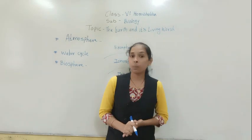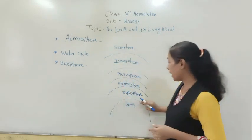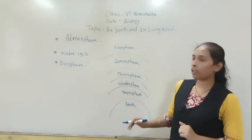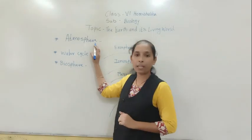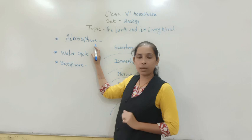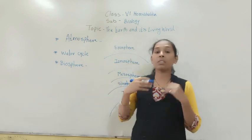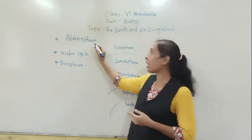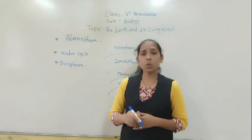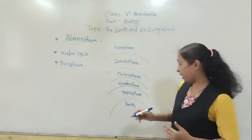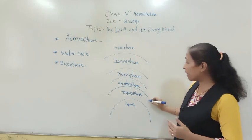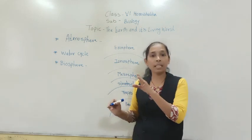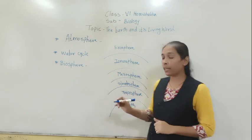What is meant by atmosphere? As we know, our earth is having a layer of air, and that layer of air is called the atmosphere. Our earth is surrounded by a layer of air, and that layer is called the atmosphere. This atmosphere contains different layers — but what are the names of those layers?